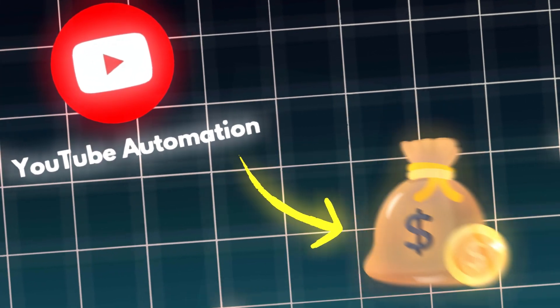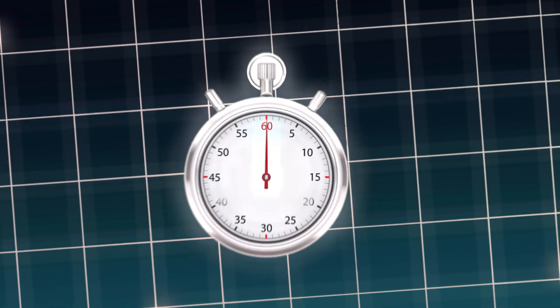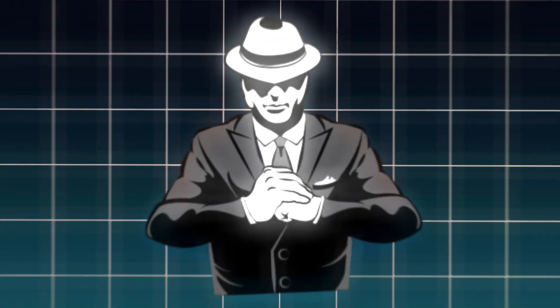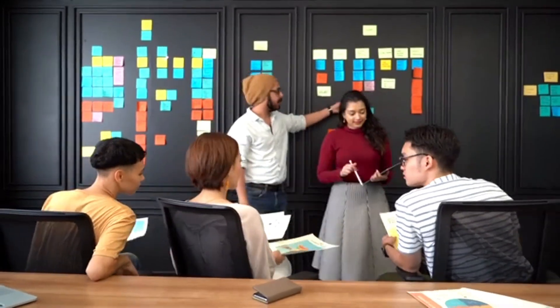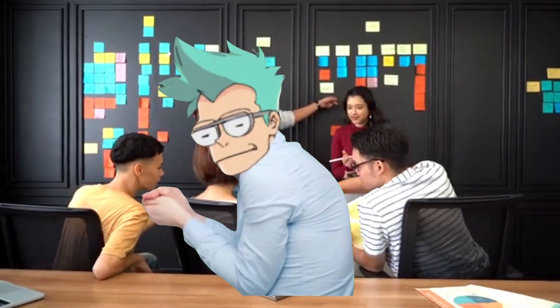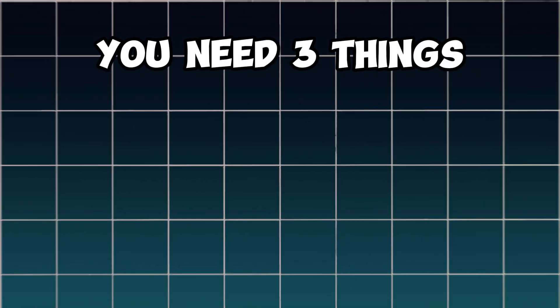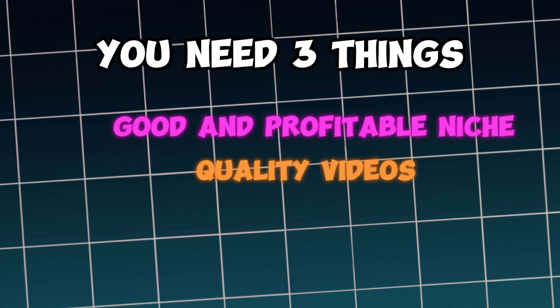YouTube automation is one of the best ways to make passive income online. The starting cost is very low, and you only need to spend a few hours a day. You can do it from anywhere in the world. Big YouTube experts promote expensive courses and say you can become a successful creator by following them, but they don't give all the details. To be a successful content creator and make more money, you need three things: a good and profitable niche, quality videos, and consistency.